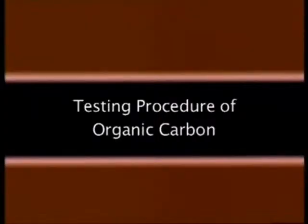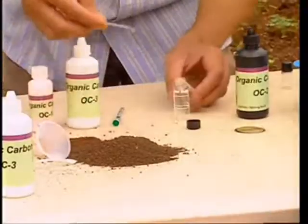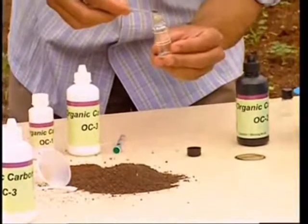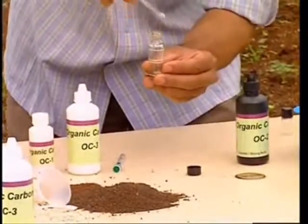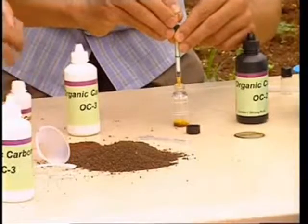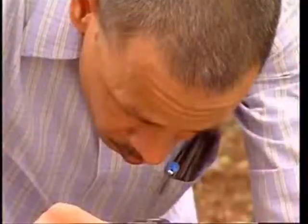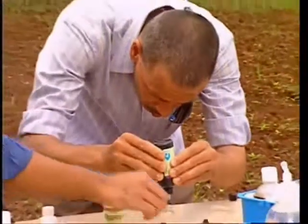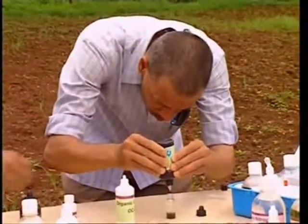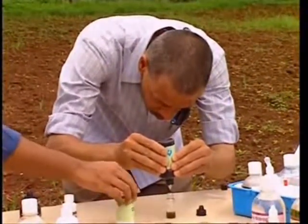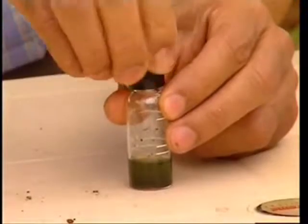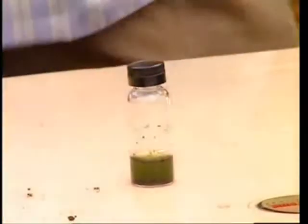Testing procedure for organic carbon. Using a funnel and spoon, add 100 mg of soil sample to the glass bottle. Add 10 drops of reagent OC1 and mix. Then add 80 drops of reagent OC2 carefully. Put the cap and swirl the bottle gently to mix.